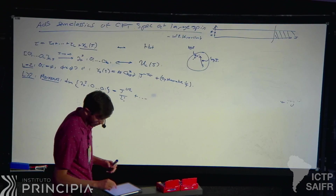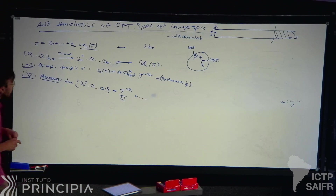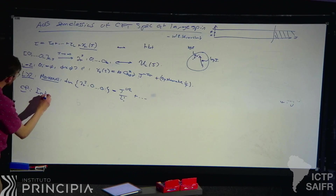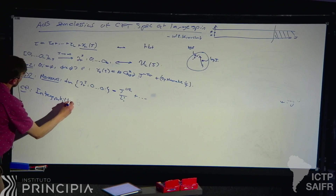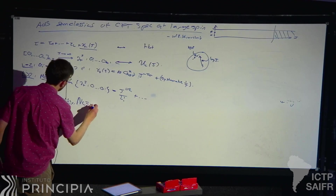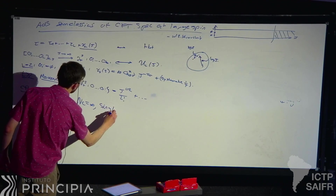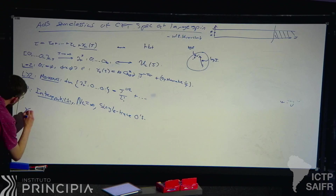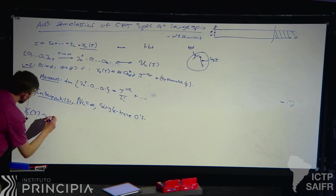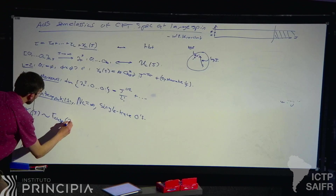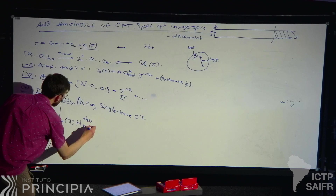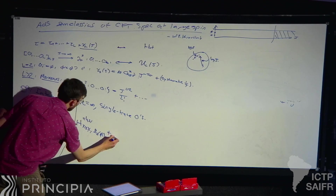The question is how to deal with this mixing problem. There are hints from integrability. Specifically, in the planar limit with large N and single trace operators, it's known that gamma_L(J) in its large spin limit is controlled by gamma_cusp as a function of the 't Hooft coupling, times the classical XXX spin chain in the SL(2,R) sector. Here I'm specifically considering leading twist operators.